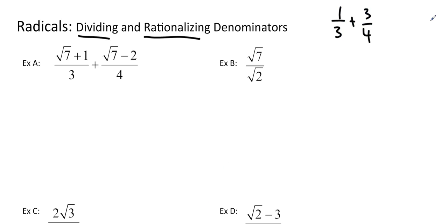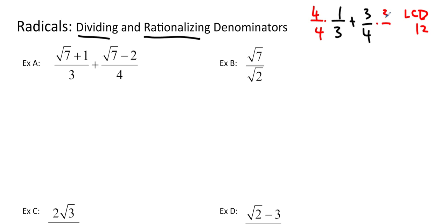So 1 over 3 plus 3 over 4. First thing I have to do is look for the LCD. The LCD is going to be 12. 3 times 4 is 12, and because they don't share any factors, that's why it is 12. So we're going to multiply 3 by 4 to get 12. We can't just multiply by 4 on the bottom — we do have to multiply by 4 over 4, which is 1. And 3 times 4 is 12 as well, so we're going to multiply by 3 over 3. That gives us a denominator of 12 here and 12 here.